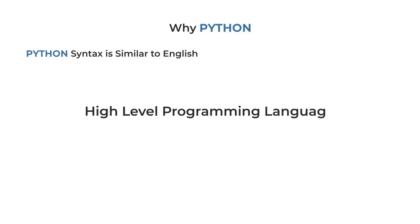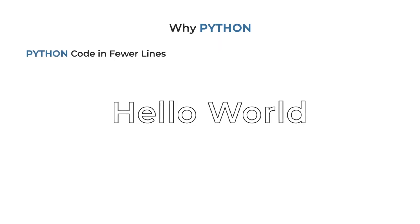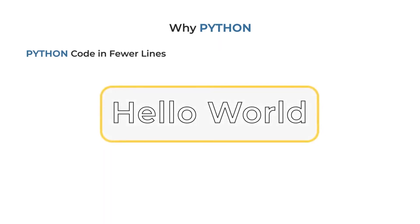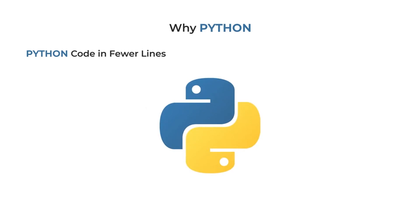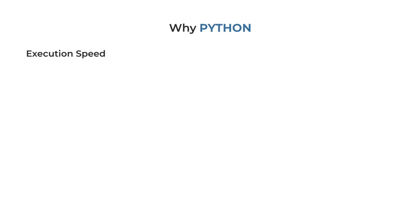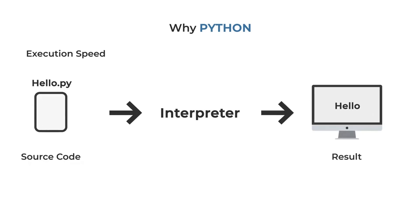The syntax is similar to English, as mentioned — it is a very high-level programming language. For example, a Hello World program that takes a minimum of 5 lines of code in other languages can be done in Python in very few lines. The one drawback is execution speed — there is some loss in execution speed. However, with today's high-end processors in mobiles and computers getting faster, that is not really a challenge. You can compensate by using a bigger processor.